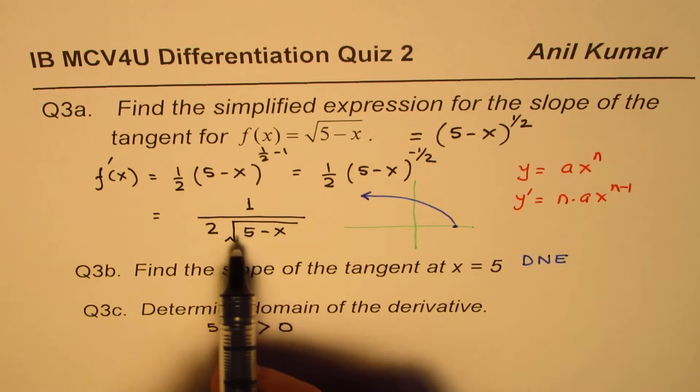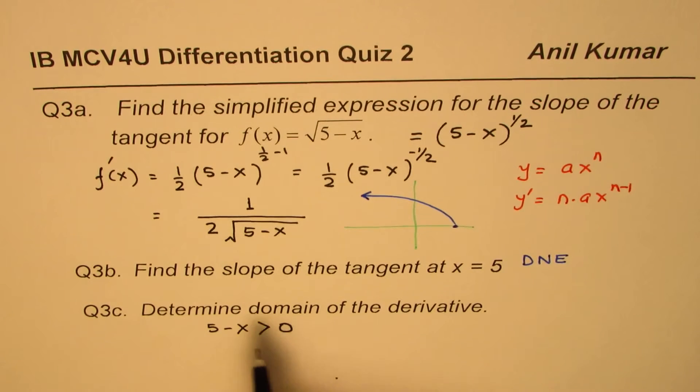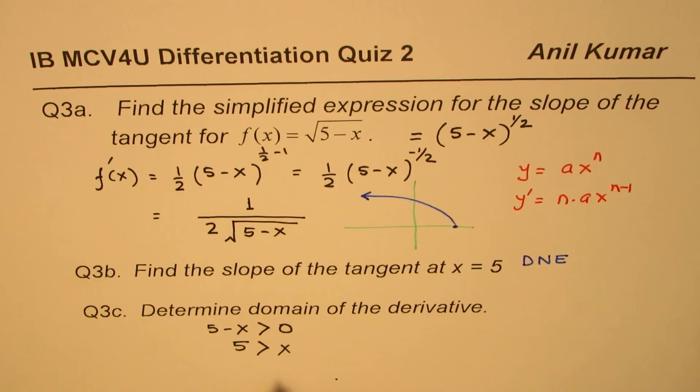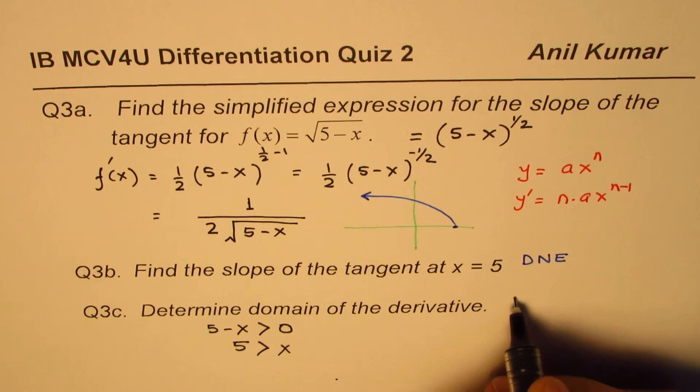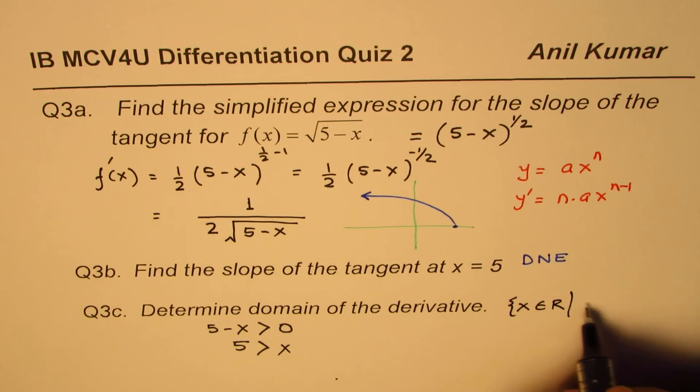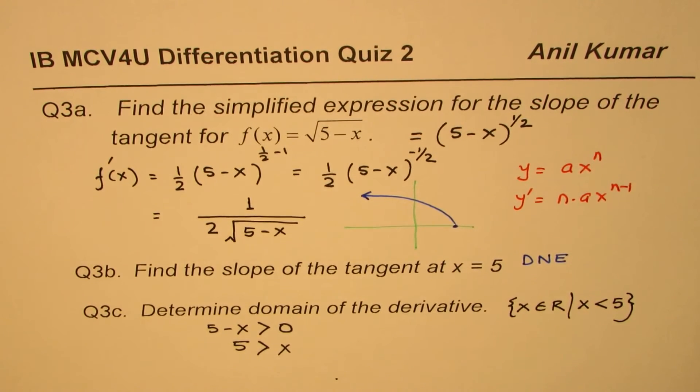Otherwise, negative values give imaginary numbers. So simplifying this, we get x should be less than 5. So we can write down the domain for this function as x belongs to real numbers where x is less than 5. That becomes the domain for the function.